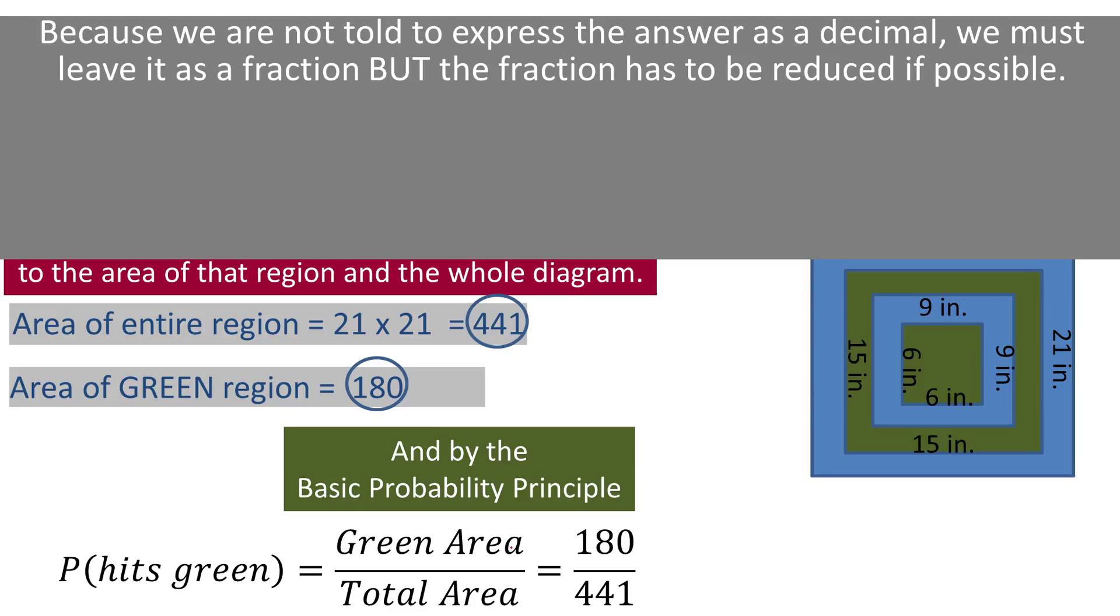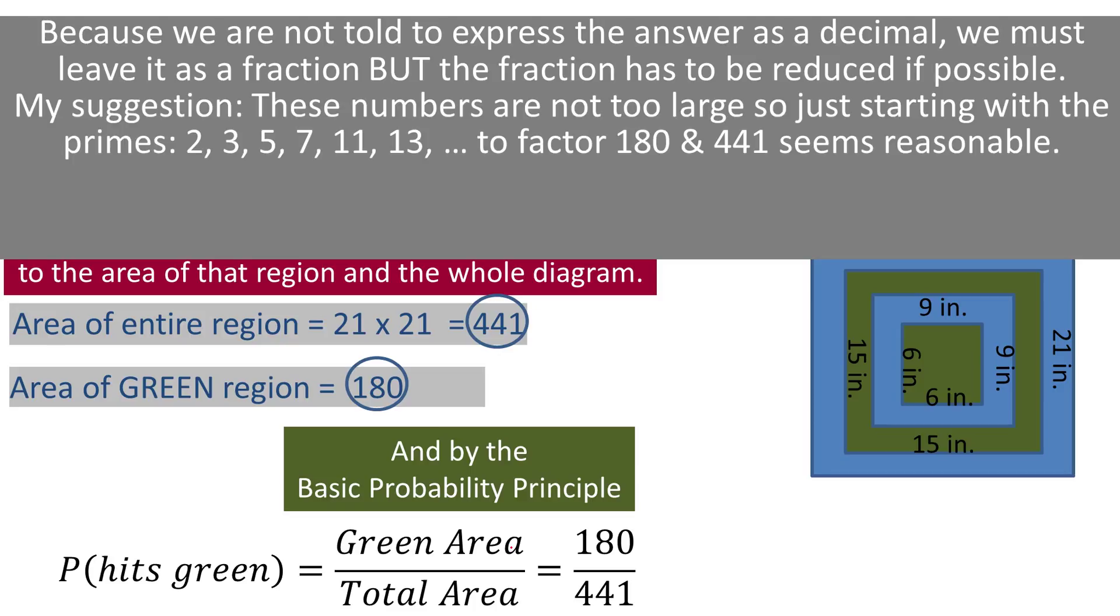I need to get this fraction reduced. When the numbers aren't really very large, my usual strategy is just to start with the primes: 2, then 3, then 5, 7, 11, 13, and keep going until I can assure myself that I've completely factored everything. So I'll just take 180 and try to factor it into its prime factorization, and I'll take 441 and do the same, and then I'll divide out any common factors, and what I'm left with will be the final reduced answer. So let's do that.